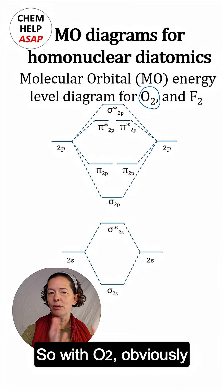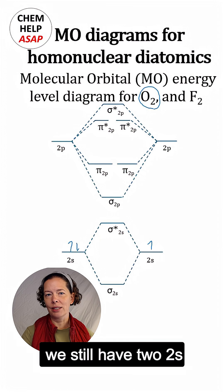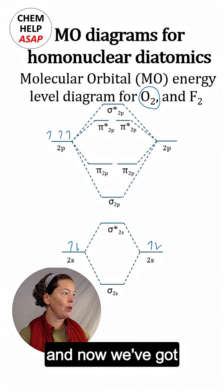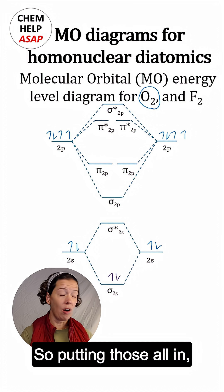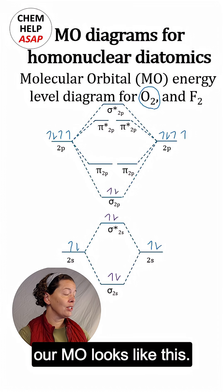So with O2, obviously we still have two 2s electrons for each oxygen, and now we've got four 2p electrons. So putting those all in, our MO looks like this.